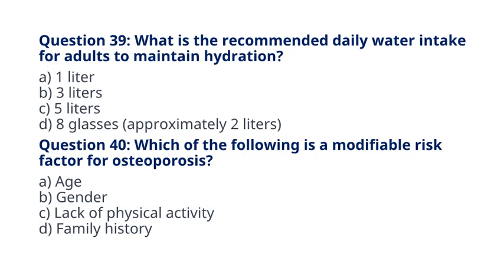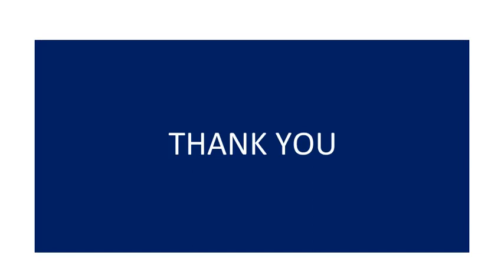Question 40. Which of the following is a modifiable risk factor for osteoporosis? A. Age. B. Gender. C. Lack of physical activity. D. Family history. The correct answer to question 40 is option C. Lack of physical activity. Explanation: Lack of physical activity is a modifiable risk factor for osteoporosis. Regular weight-bearing exercise helps maintain bone density and strength. Thank you everyone. Don't forget to subscribe to my YouTube channel, Education and Teacher Education at Shoki Milal.